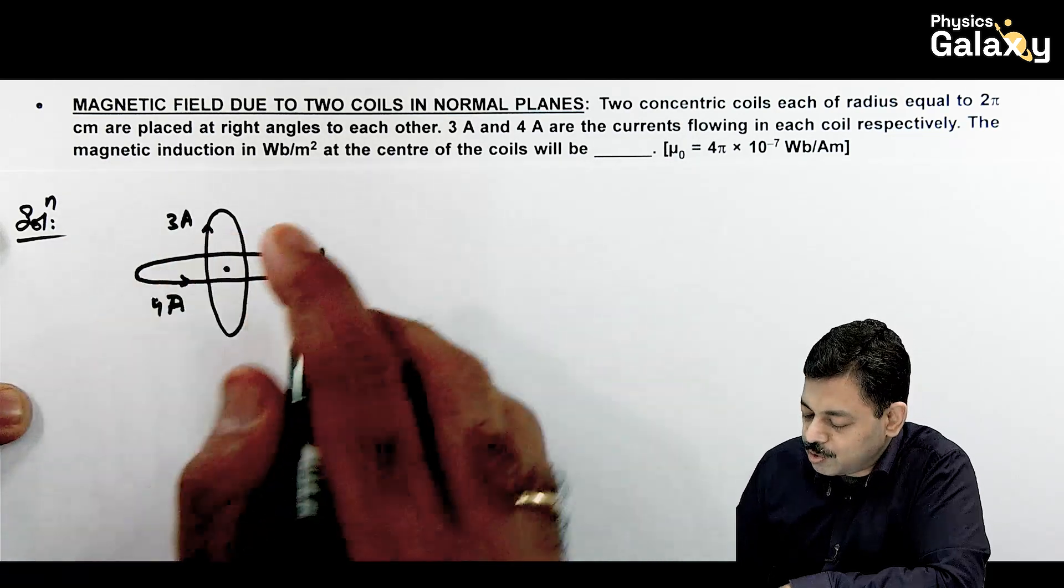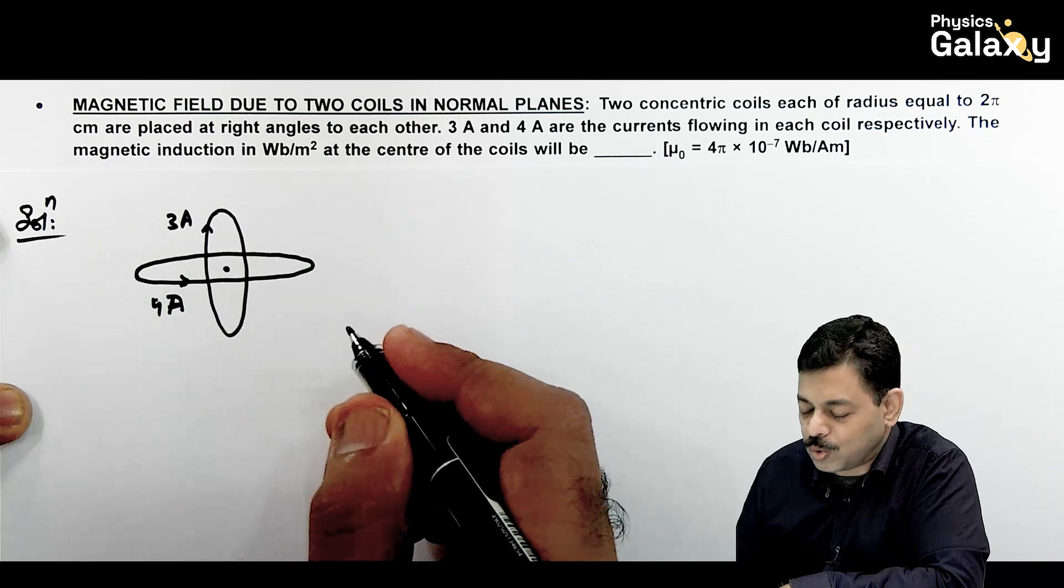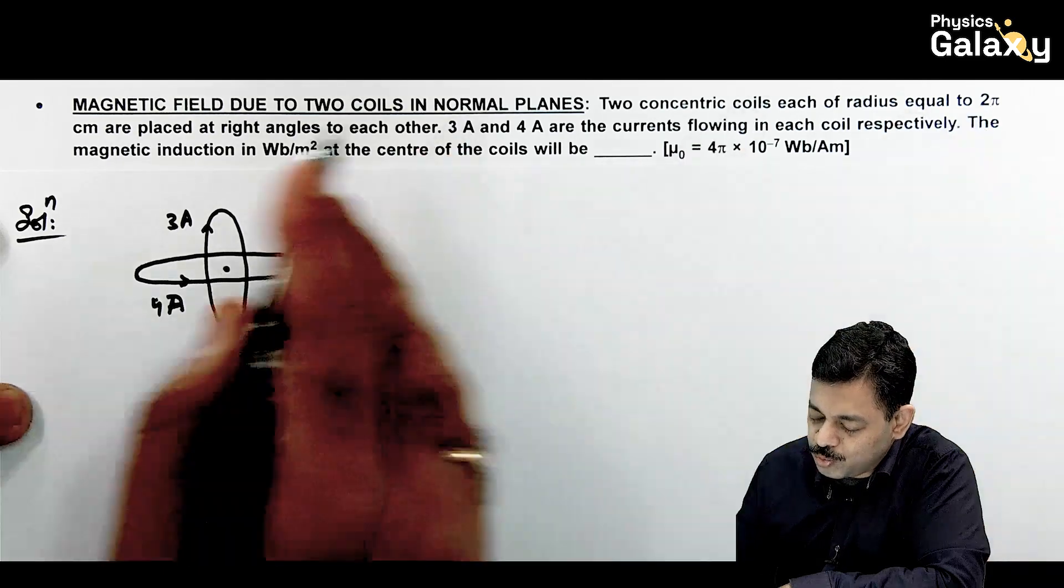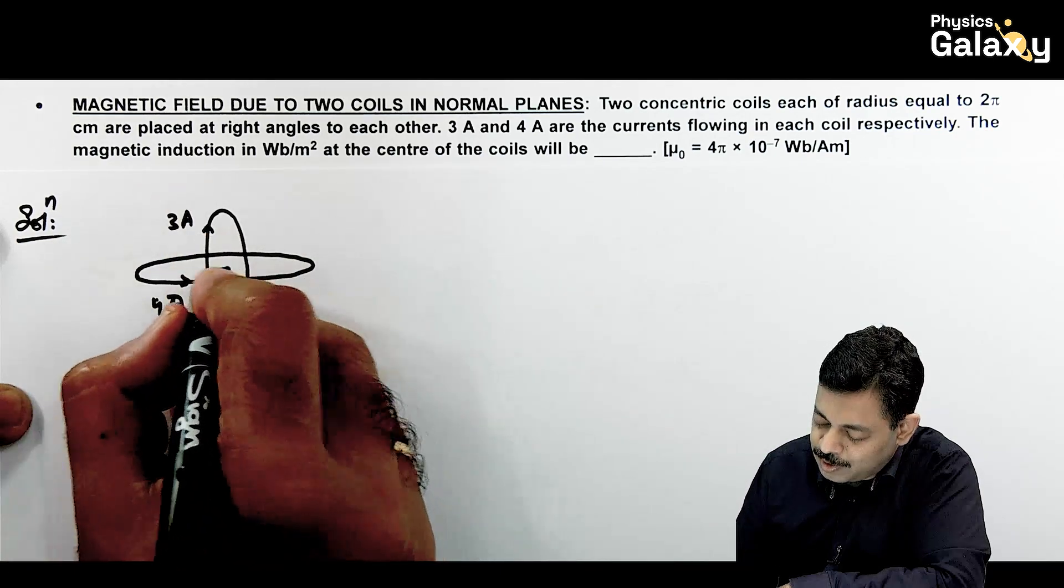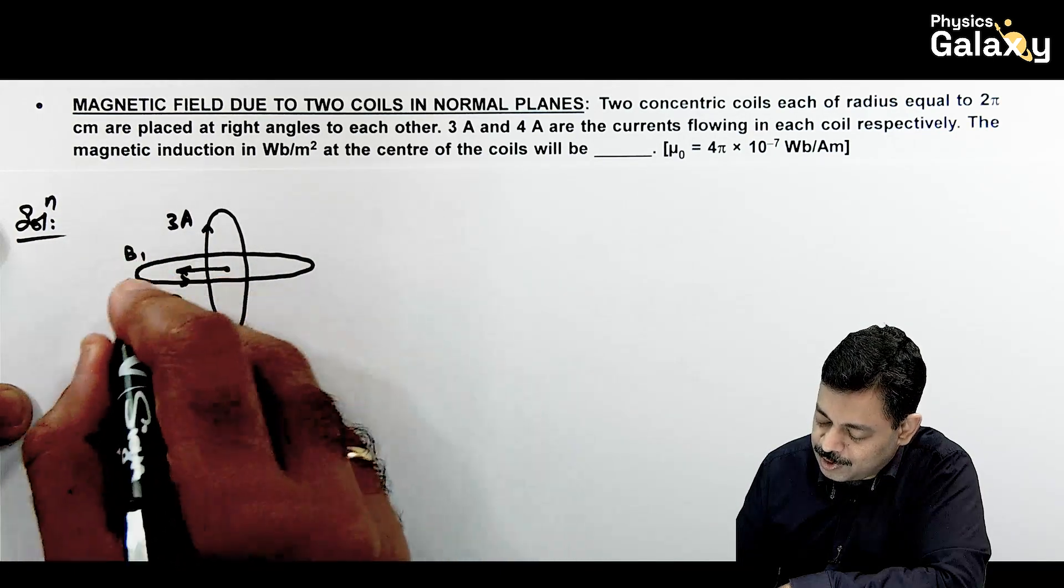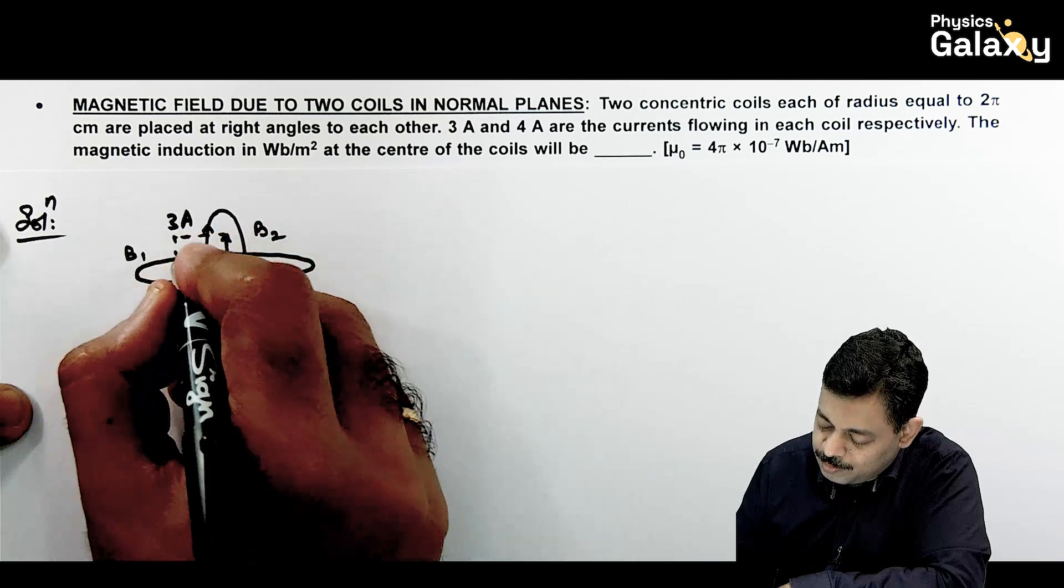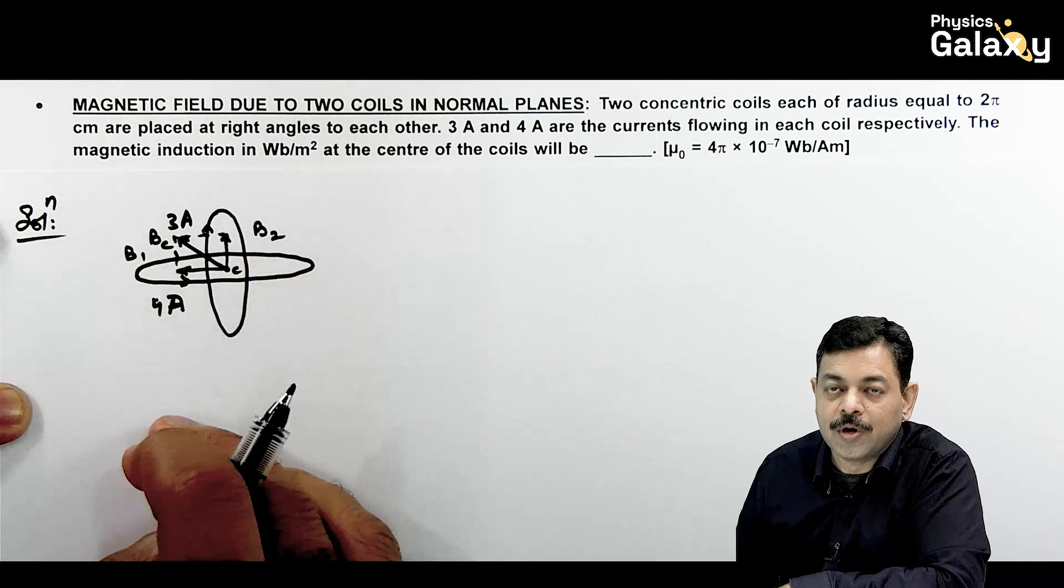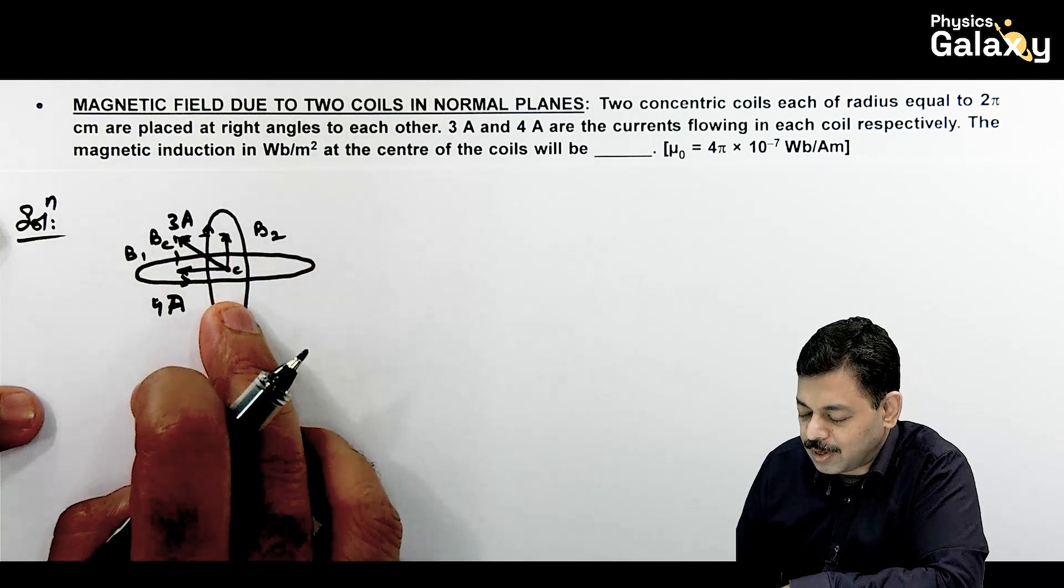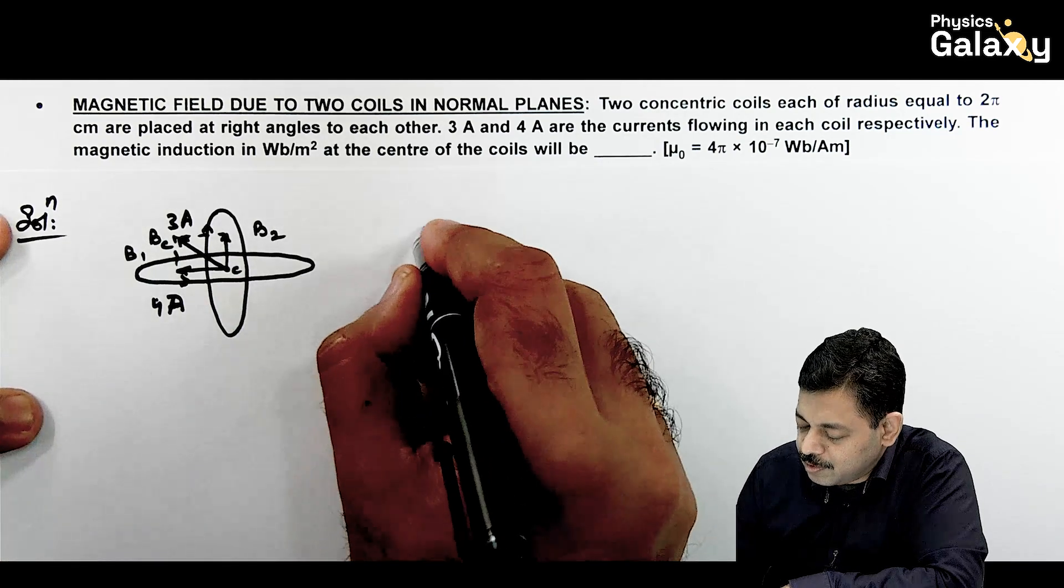These are the currents flowing in each coil respectively. We need to check the magnetic induction at the center of coils. Due to a circular coil, magnetic field expression is mu naught i by 2r. Both coils have radius 2 pi centimeter. Due to first coil, magnetic field will be leftward, it is B1. Due to second coil, magnetic field will be upward, it is B2. Resulting magnetic field will be Bc at the center.